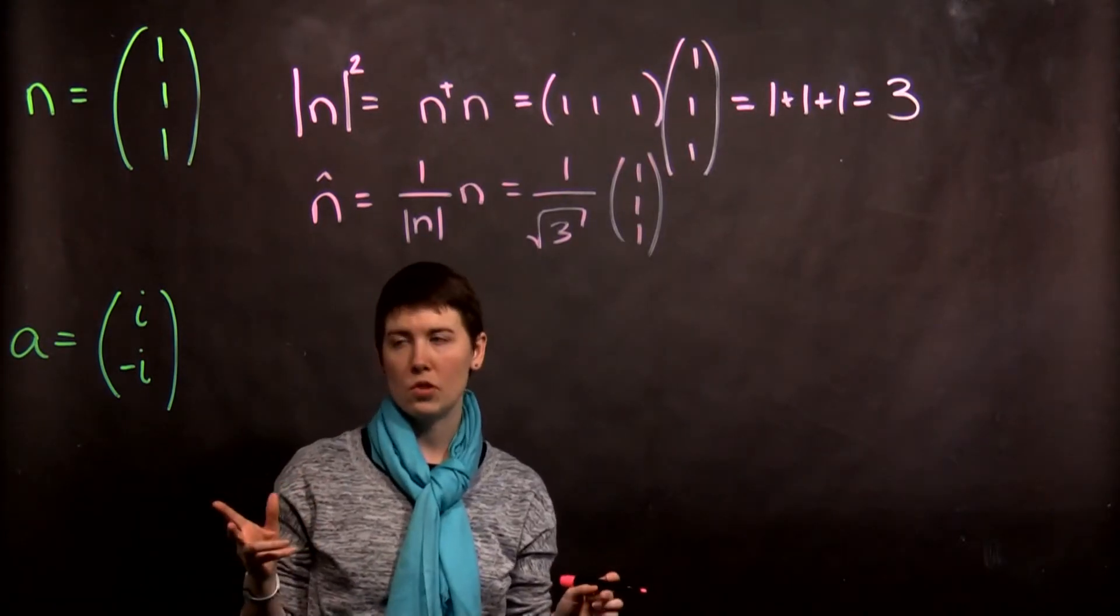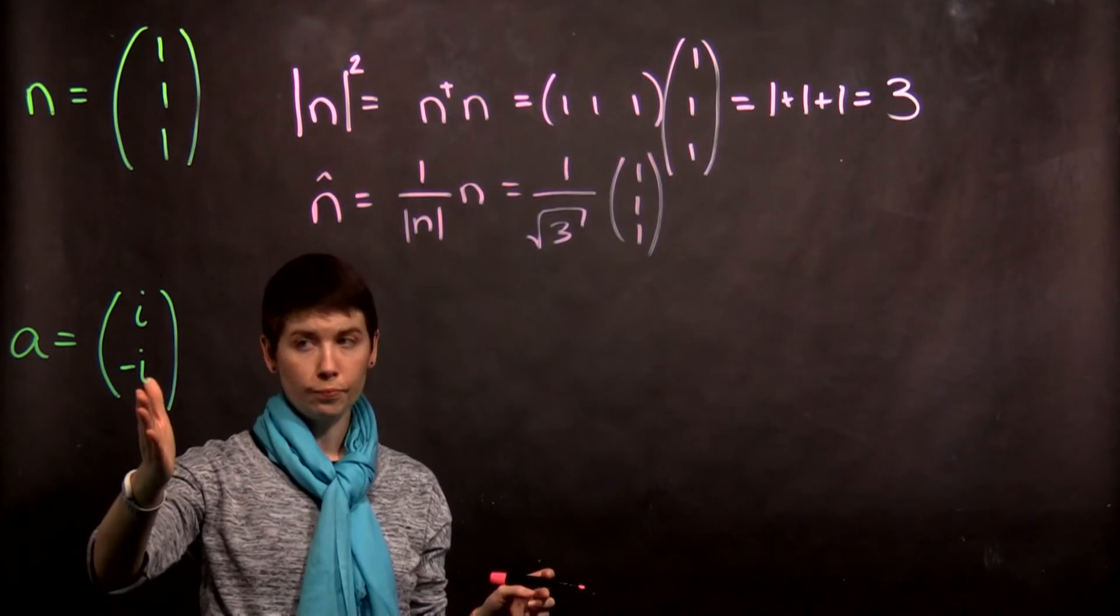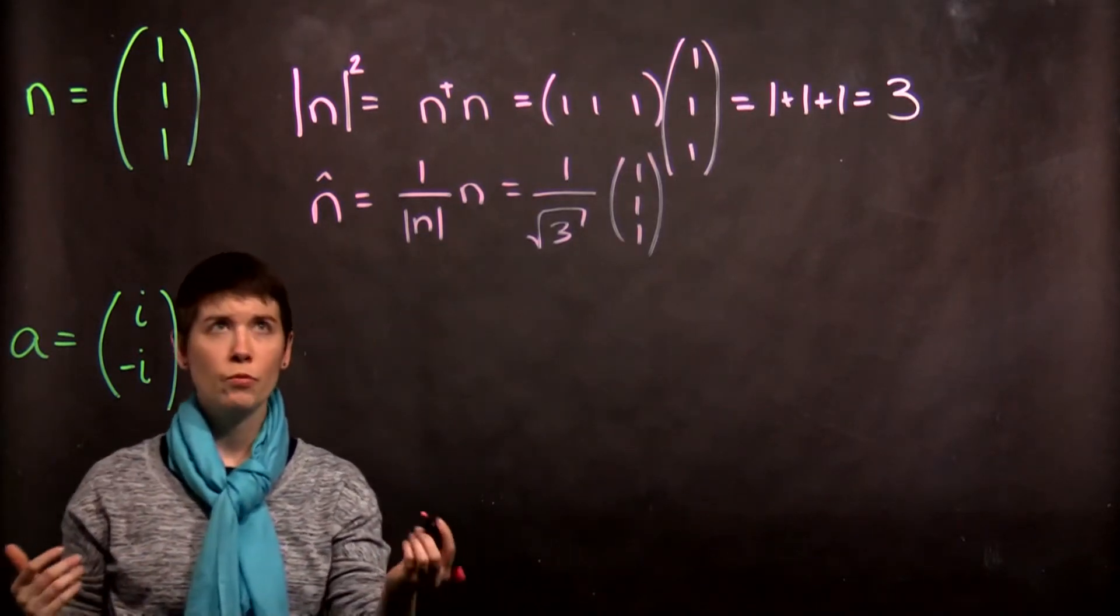So, now let's do a slightly harder situation. Now, we actually have a complex vector, only with two entries.